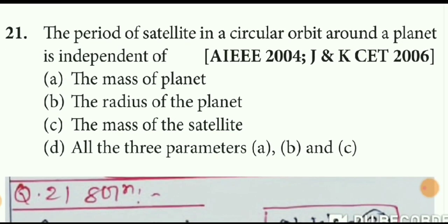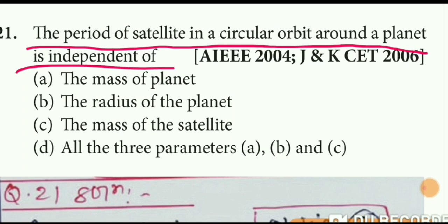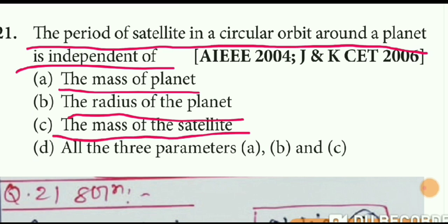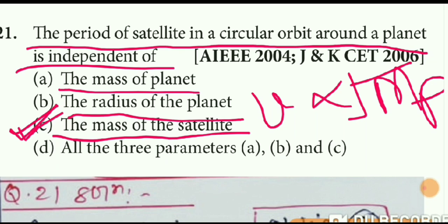Question number 21: the period of a satellite in circular orbit around a planet is independent of what? The period depends on the mass of the planet and the radius of the orbit, but orbital velocity and time period do not depend on the mass of the satellite. So the correct choice is option C — mass of the satellite.